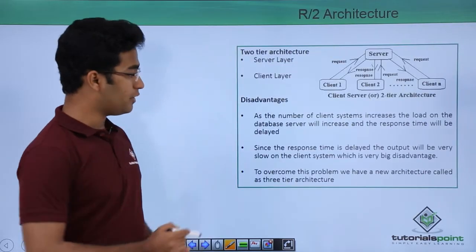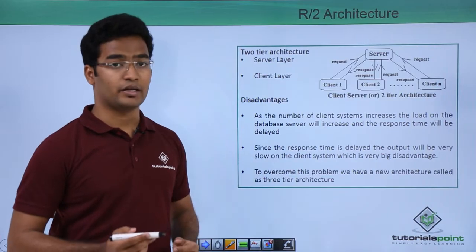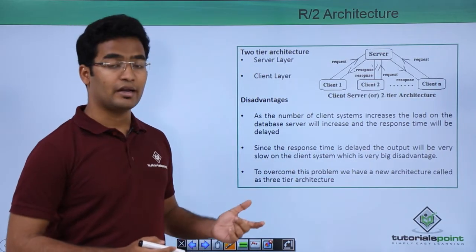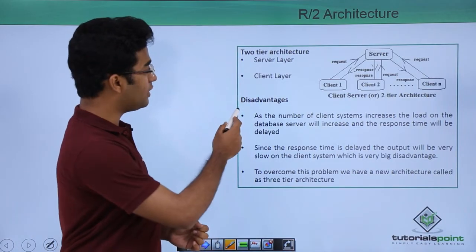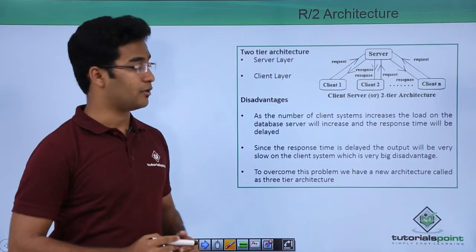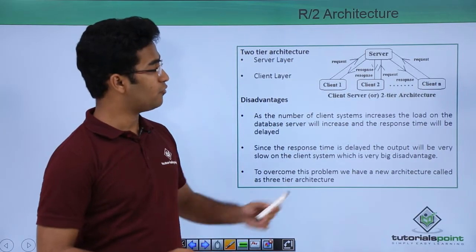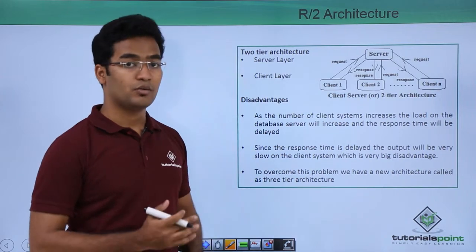In 1980, SAP released R2 architecture. R stands for real-time and 2 stands for two-tier. Two-tier means there were two layers: one is the server layer and the second one is the client layer. In the server layer, there was one highly configured system called the server.